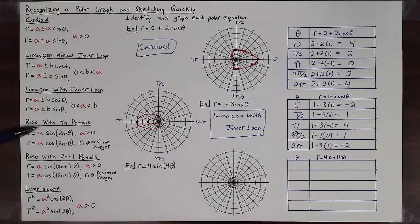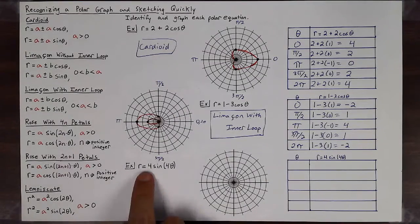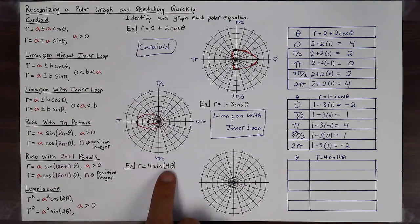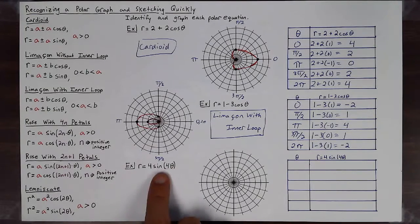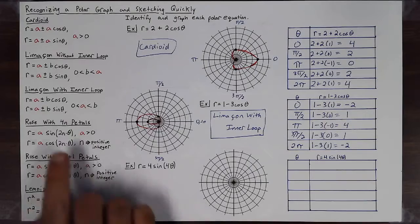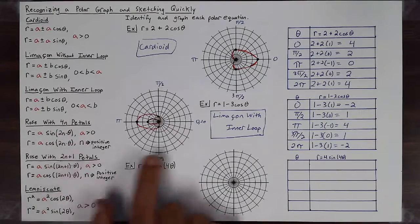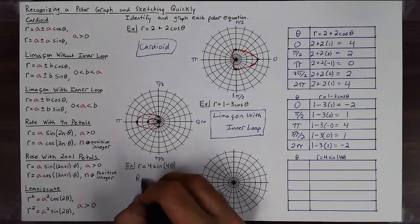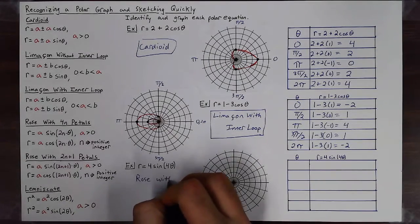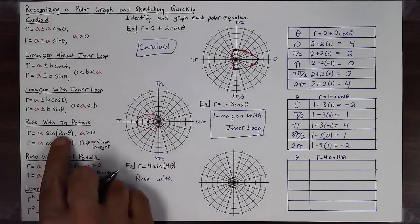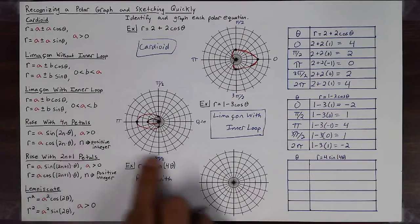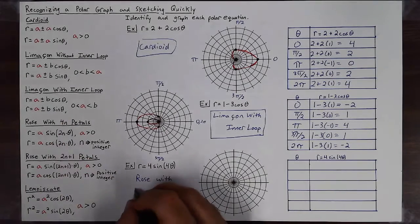Lastly, we have r = 4sin(4θ). With no addition, it's either a circle or some sort of rose. Since I have a different period — 4θ instead of just θ — I know it's a rose. With an even number next to θ, the number of petals is double that number. So 4 × 2 = 8 petals.